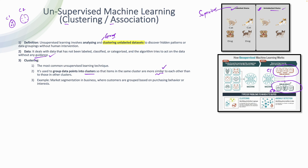Unsupervised machine learning is really useful in market segmentation in businesses, where customers are grouped based on their purchasing behavior. Companies can then see the purchasing behavior patterns and target those customer groups with relevant advertisements accordingly.